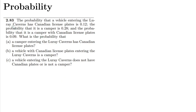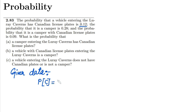Welcome back. This is question 2.83. The problem states: the probability that a vehicle entering Luray Caverns has a Canadian license plate is 0.12. Let me represent this with C. So the given data: P(C) = 0.12. From this we can also find the probability that the vehicle will not have a Canadian license plate: P(C') = 1 - 0.12 = 0.88.